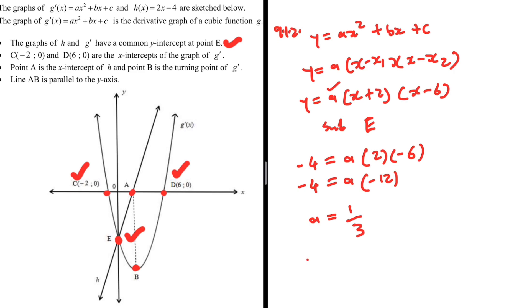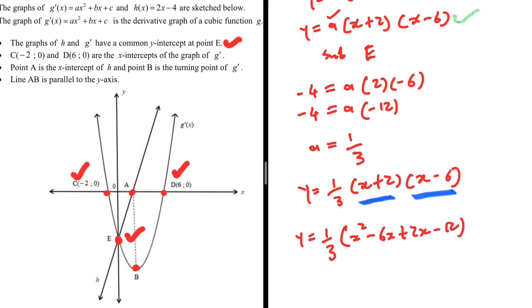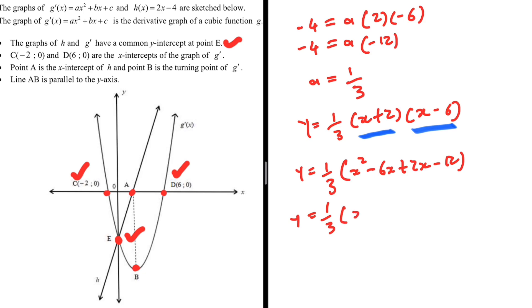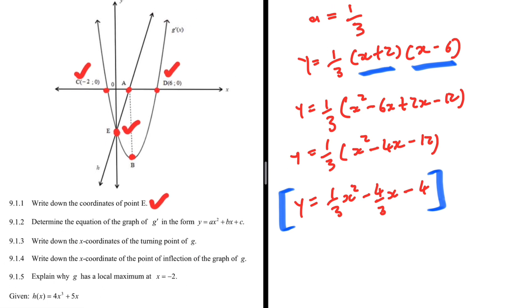Now we substitute A back into the equation: Y = (1/3)(x + 2)(x − 6). Expanding the brackets: x × x = x², and x − 6x + 2x − 12, so Y = (1/3)(x² − 4x − 12). Distributing: Y = (1/3)x² − (4/3)x − 4. This is G'(x) in the form Y = Ax² + Bx + C. That is 9.1.2.